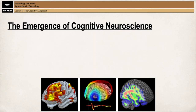One final element of the approach you need to know about is the emergence of cognitive neuroscience. Cognitive neuroscience is the scientific study of the influence of brain structures on mental processes. For example, it can tell us about how certain neurotransmitters impact our behaviour, like the effect of serotonin on depression or OCD, or the effect of dopamine on schizophrenia.